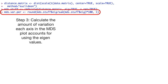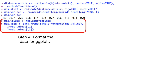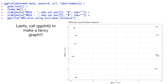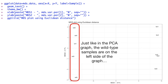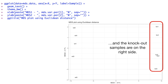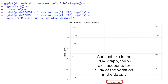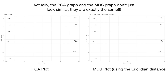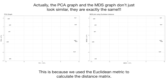Step 3: calculate the amount of variation each axis in the MDS plot accounts for using the eigenvalues. Step 4: format the data for ggplot. Lastly, call ggplot to make a fancy graph. Just like in the PCA graph, the wild type samples are on the left side of the graph and the knockout samples are on the right side. And just like in the PCA graph, the x-axis accounts for 91% of the variation in the data, and the y-axis only accounts for 2.7%. The PCA graph and the MDS graph don't just look similar — they are exactly the same. This is because we used the Euclidean metric to calculate the distance matrix.